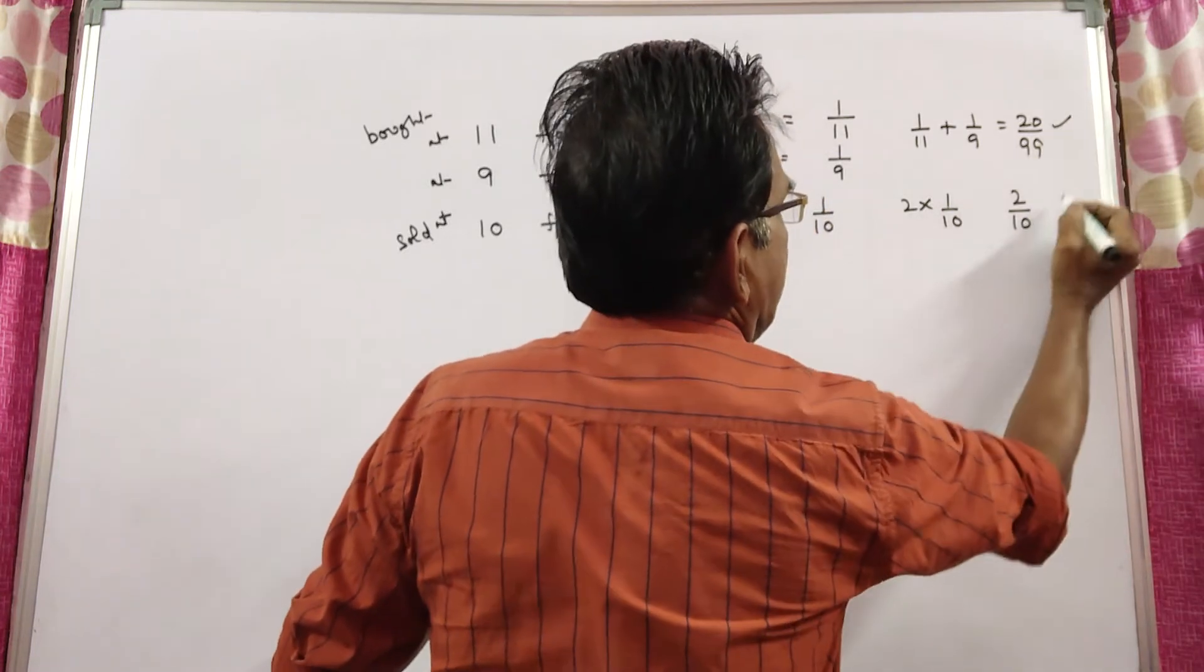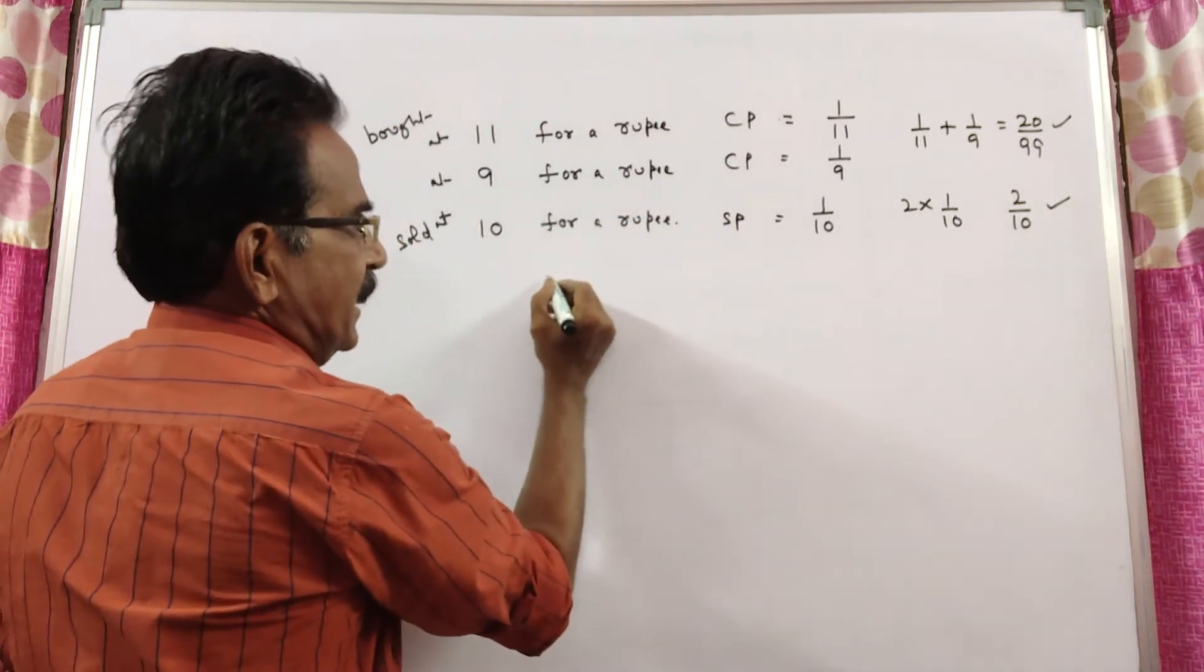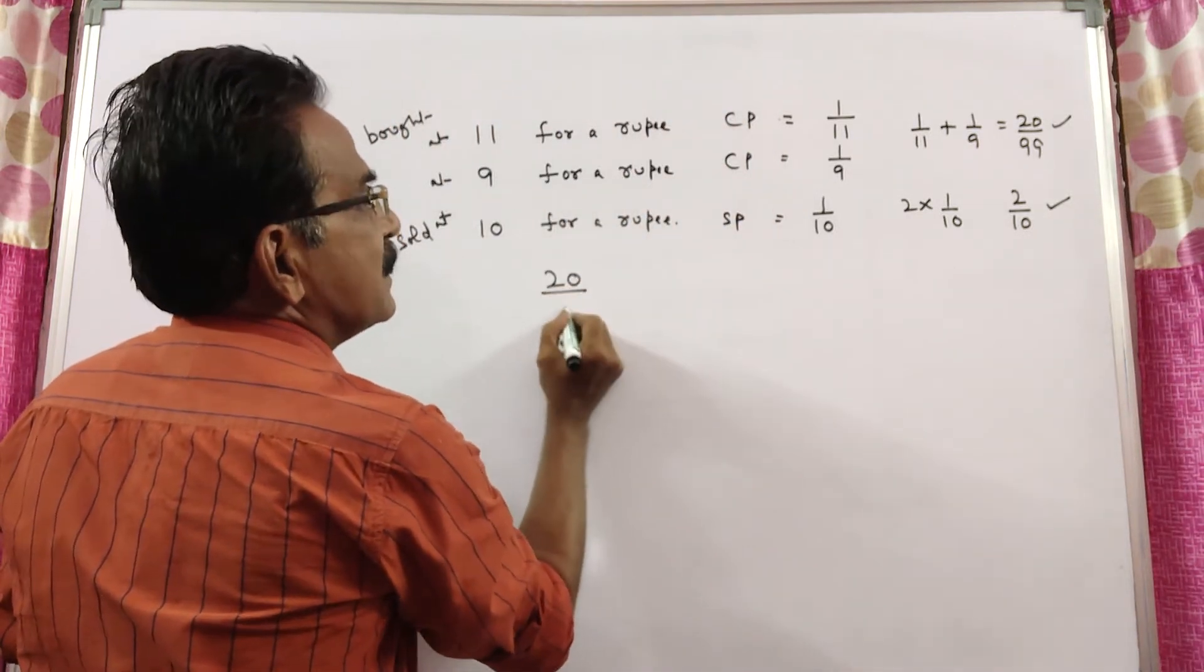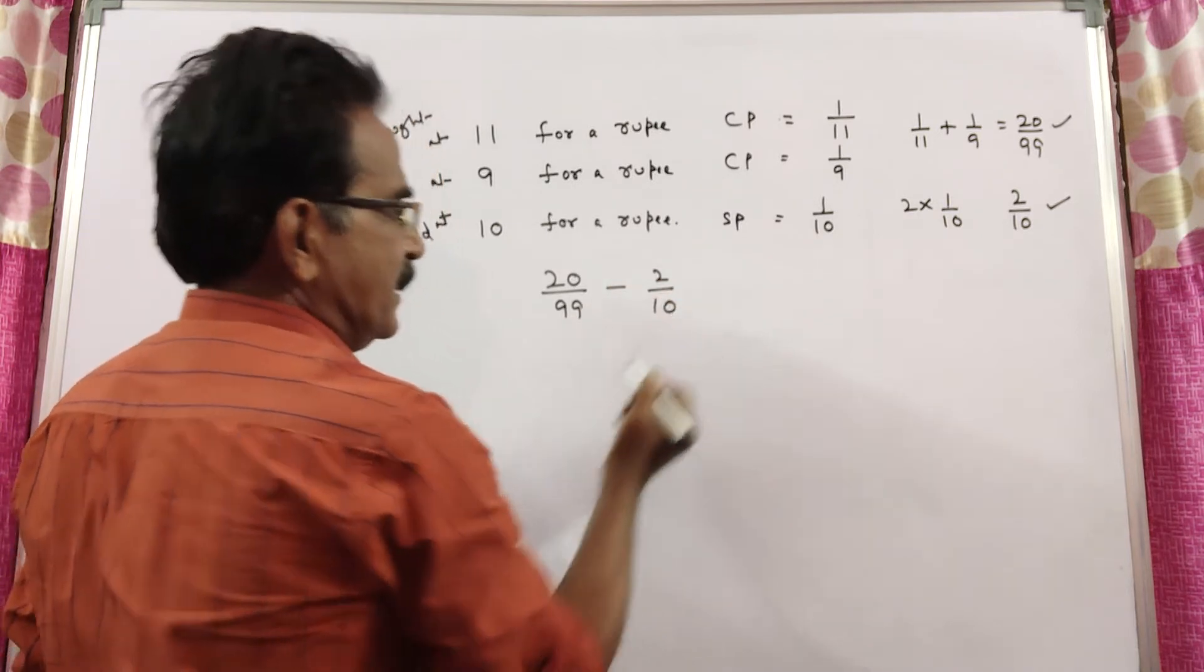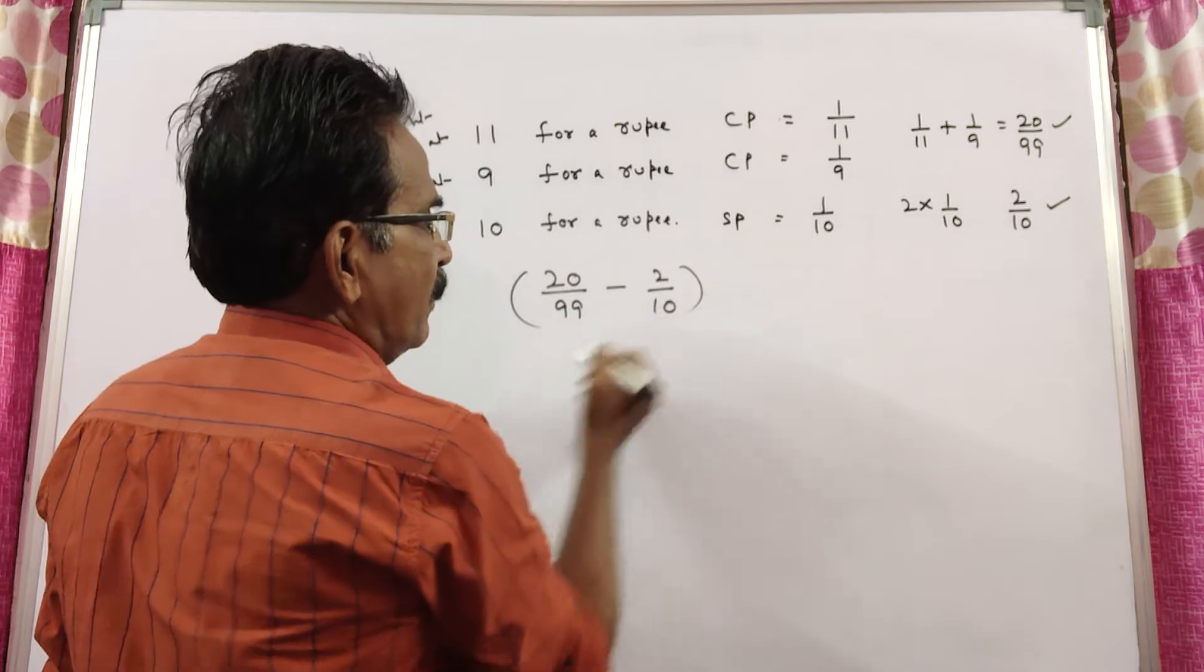So this is the cost price, this is the selling price. Let us see the loss. Loss is equal to cost price minus selling price. This is the loss.